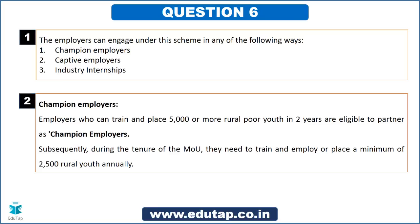Captive employers are those who ensure they employ trained people within their own companies — if they have vacancies, they take in the people they are training. Champion Employers, by training 5,000+ people, also get their work done through those trainees — it is a give-and-take process between employers and job-seekers.